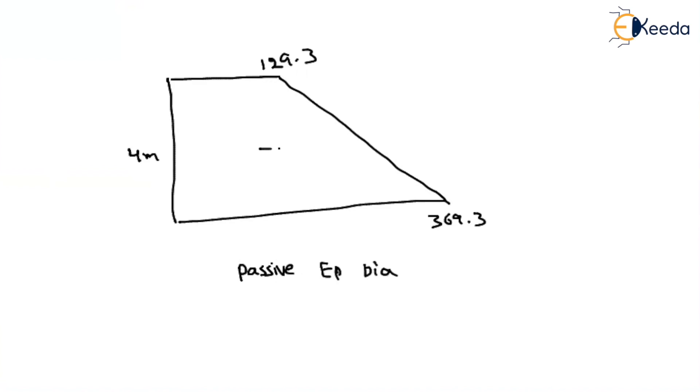If you want to find the total magnitude, then find out the area. Area is A plus B by 2 into H: 129.3 plus 369.3 divided by 2 into 4, equals 997.2 kilonewton per meter. That means if you take 1 meter length of the retaining wall, you are having a passive earth pressure of 997.2 kilonewton.